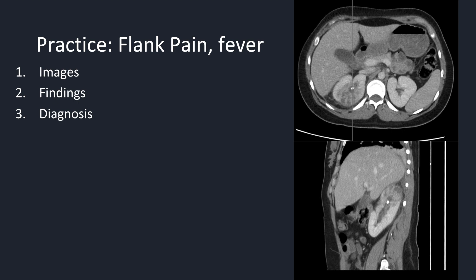Next case — try to put some words to it before I do. Axial and sagittal slices of a CT abdomen with contrast show a focal hyperdense stone in the superior pole of the right kidney, surrounded by hypodense fluid, with adjacent ill-defined heterogeneously enhancing renal parenchyma and perinephric fat stranding. This is an obstructing stone with pyelonephritis.